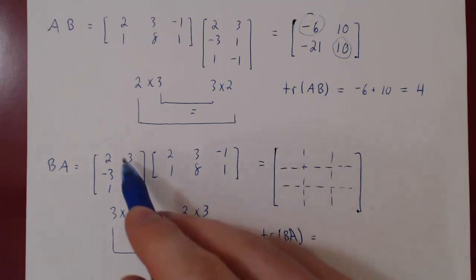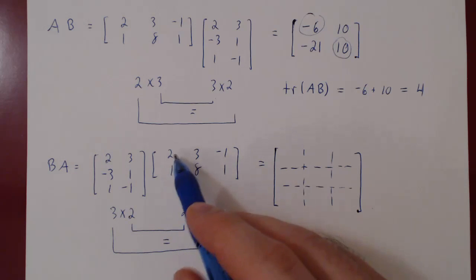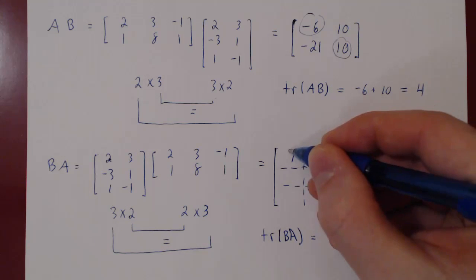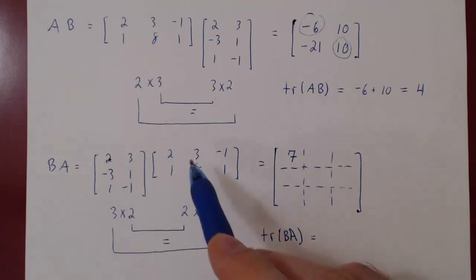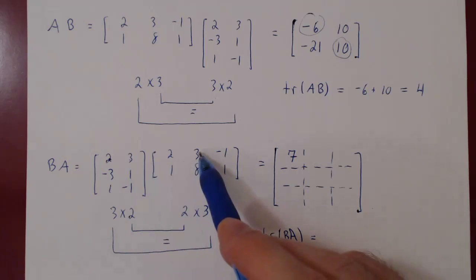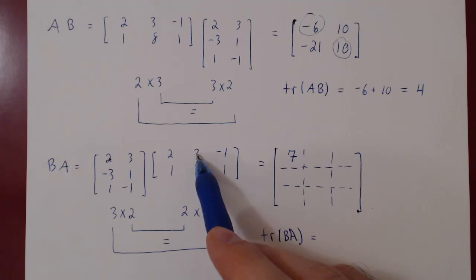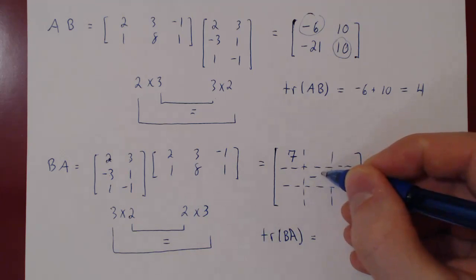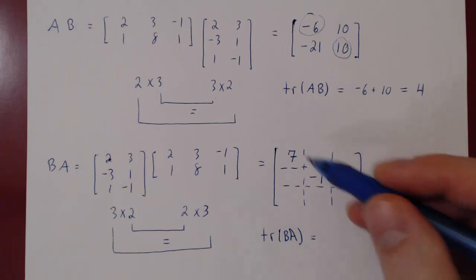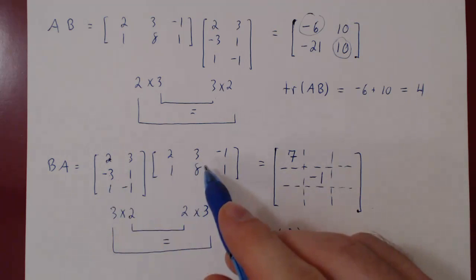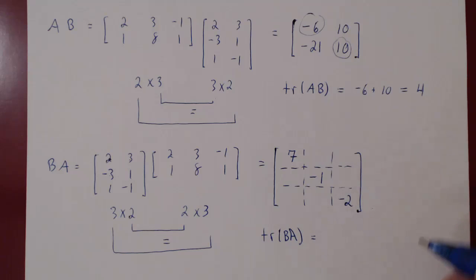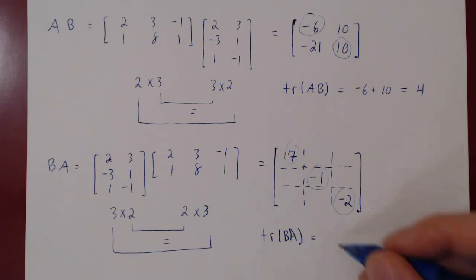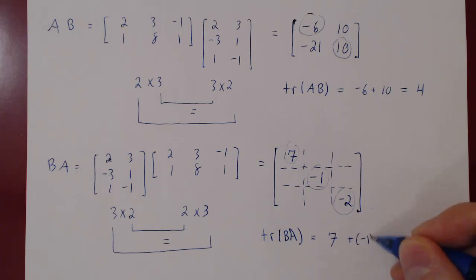Entry (1,1): first row of B times first column of A — 2 times 2 is 4, plus 3 times 1 is 3, giving 7. Entry (2,2): second row of B times second column of A — negative 3 times 3 is negative 9, plus 8 is negative 1. Entry (3,3): third row of B times third column of A — negative 1 times 1 plus negative 1 times 1 is negative 2. The trace of BA is 7 plus negative 1 plus negative 2, which is 7 minus 3, equal to 4.